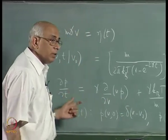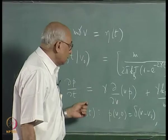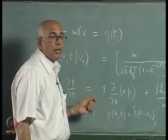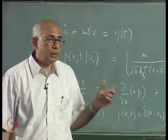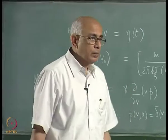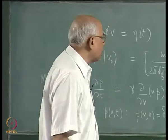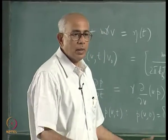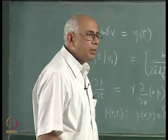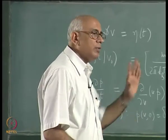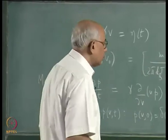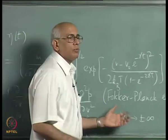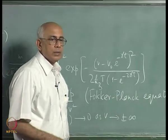This equation for the velocity was actually written down by Lord Rayleigh and is sometimes called the Rayleigh equation. But in common parlance it has become known as the Fokker-Planck equation because it is an example of a class of equations labelled as the Fokker-Planck equations.